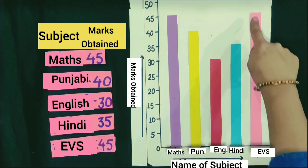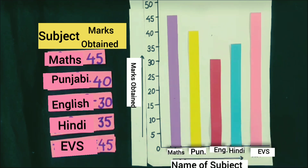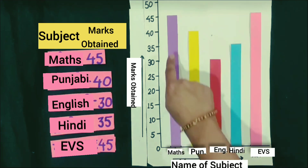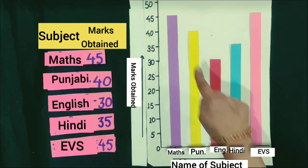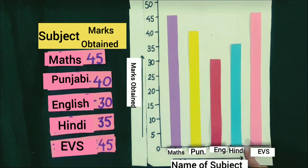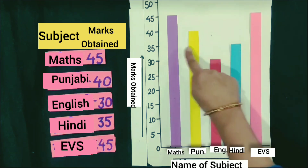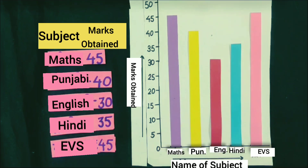Students, we have represented the marks obtained by Harman in different subjects in a bar graph. The length of each rectangular bar depends on the marks obtained. In Maths, he got 45 marks. In Punjabi, he got 40 marks. In English, he got 30 marks. In Hindi, he got 35 marks. And in EBS, he got 45 marks.